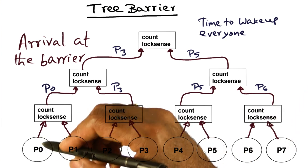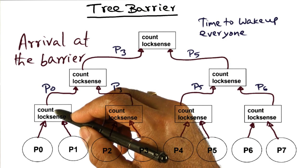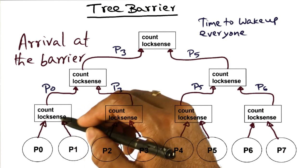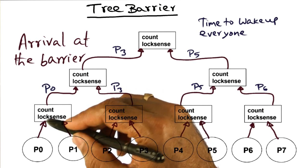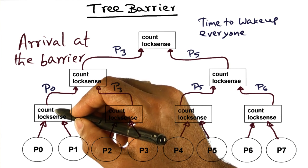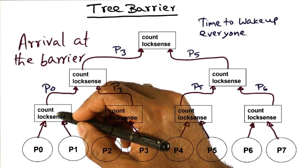So let's understand what each processor does. When a processor arrives at a barrier, it is going to decrement the count. If the count is not zero, it's going to spin on this lock sense flag. If a processor arrives at a barrier, decrements the count, finds that the count is zero, then what it is going to do is one of two things.